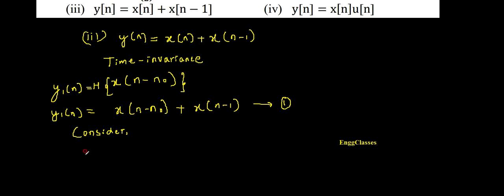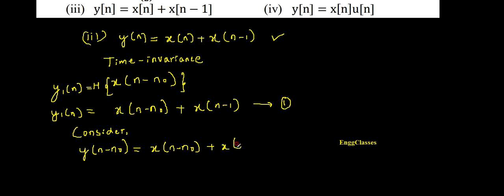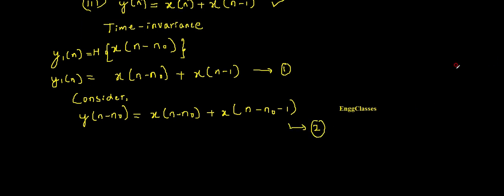Now consider the second half of the statement: shift in the input should lead to a shift in the output. So I consider y(n - n₀). What is that going to be? I already have the expression for y(n). To get y(n - n₀), in this expression I need to replace every n with n - n₀. So x(n) becomes x(n - n₀), and x(n-1) becomes x(n - n₀ - 1). This is equation number two.